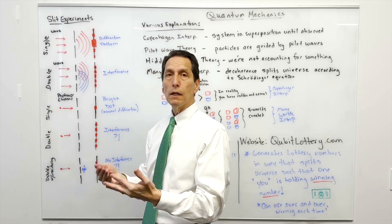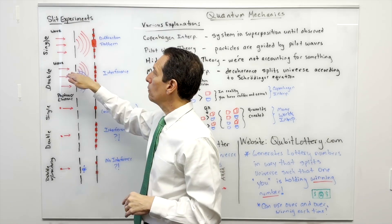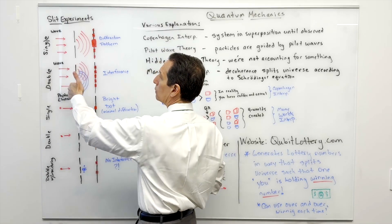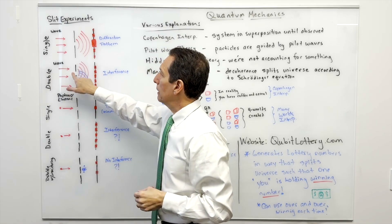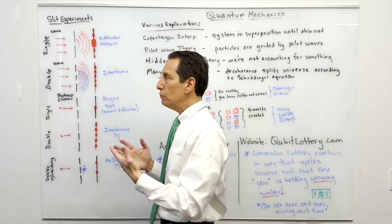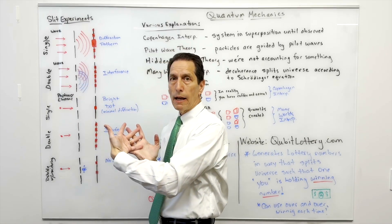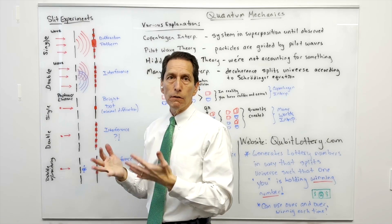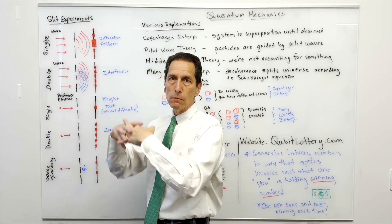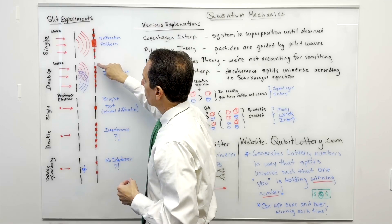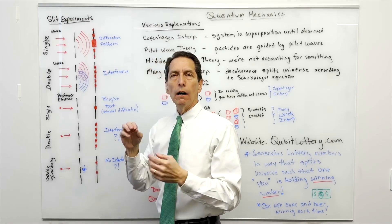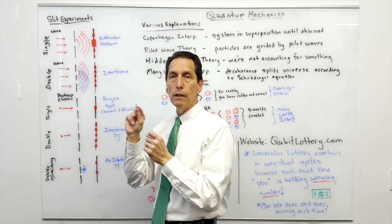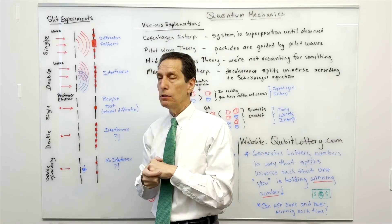They went one step further with the double slit experiment. They shone light onto two slits and waves came through both, interacting with each other to form constructive and destructive interference — adding up in some places and subtracting in others — producing well-spaced bright and dark regions on the screen.